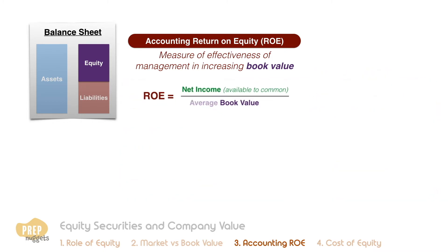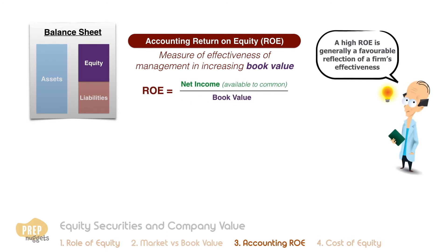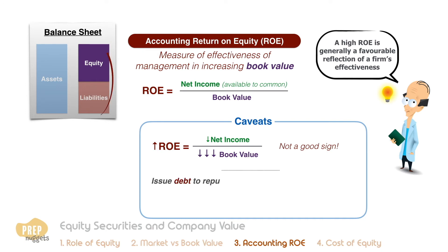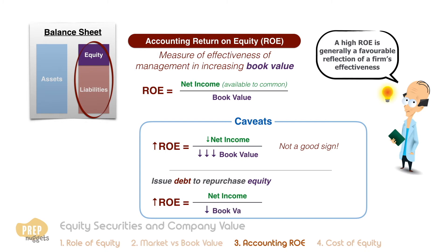A high ROE is generally a favourable reflection of a firm's effectiveness. However, an analyst should examine the reason for an increase. For example, an increase in ROE can be due to book value decreasing at a faster rate than net income — this is not a positive for the firm. A firm can also issue debt to repurchase equity, thereby decreasing the book value of equity. This would increase the ROE, but also make the firm's shares riskier due to the increased debt.